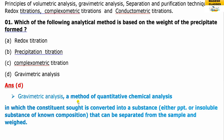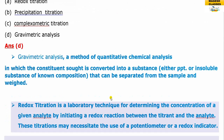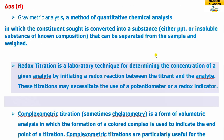Gravimetric analysis is a method of quantitative chemical analysis. It is a quantitative type — not qualitative. In this method, the analyte is converted to an insoluble substance, which is then separated and weighed. So gravimetric analysis is a weight-based method.